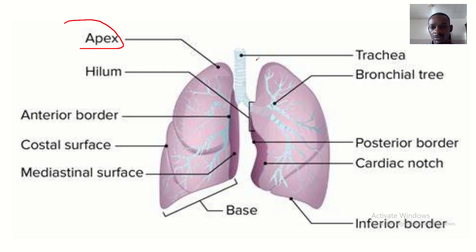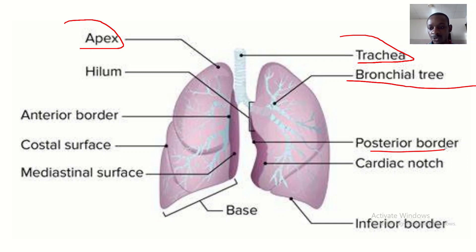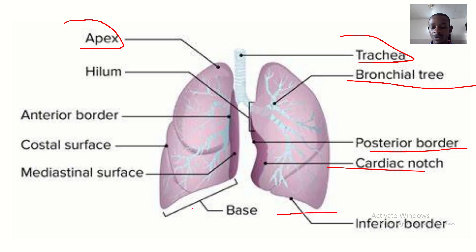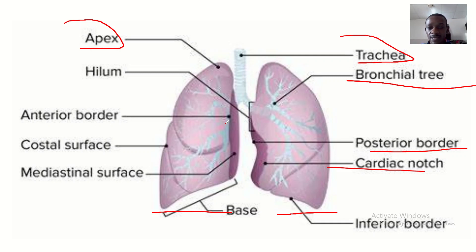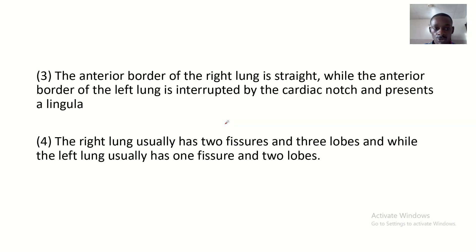This is the apex of the lungs, this is the trachea, this is the bronchial tree, this is the posterior border, and this is the cardiac notch. On our right here is actually the left lung, and on the left is the right lung, because when you turn it facing your way, your left on the screen is your right.